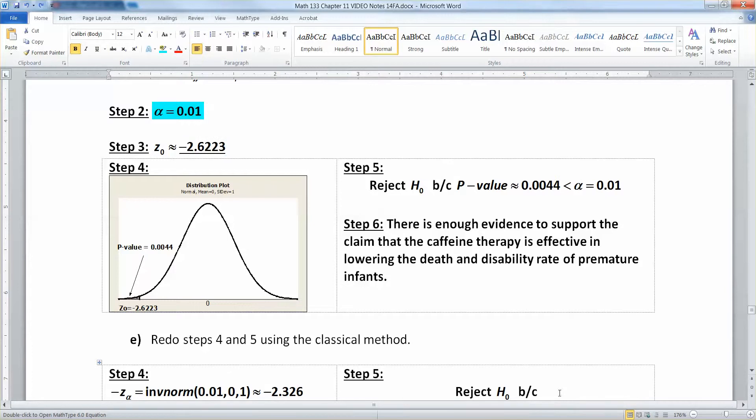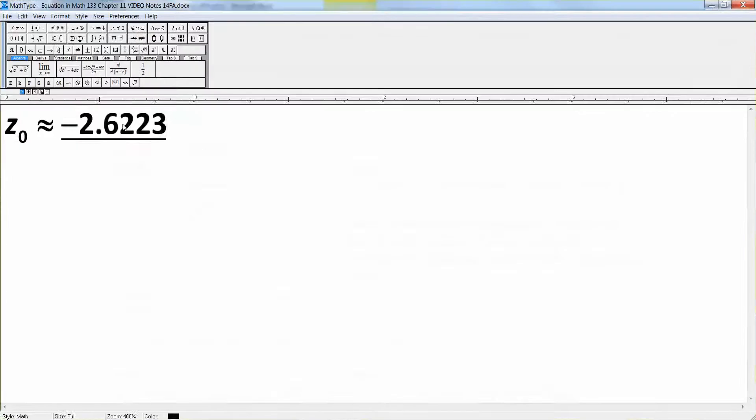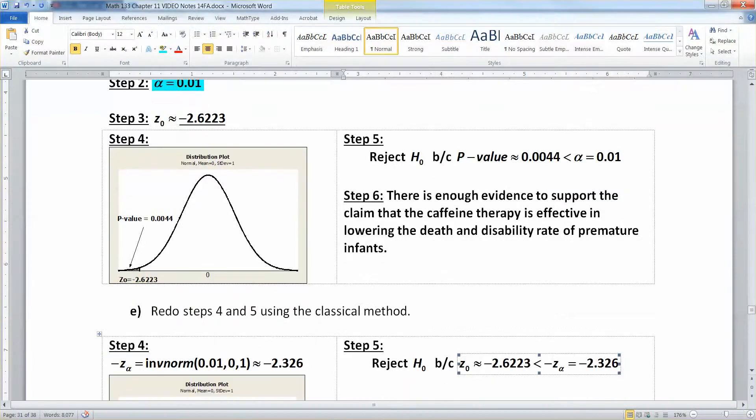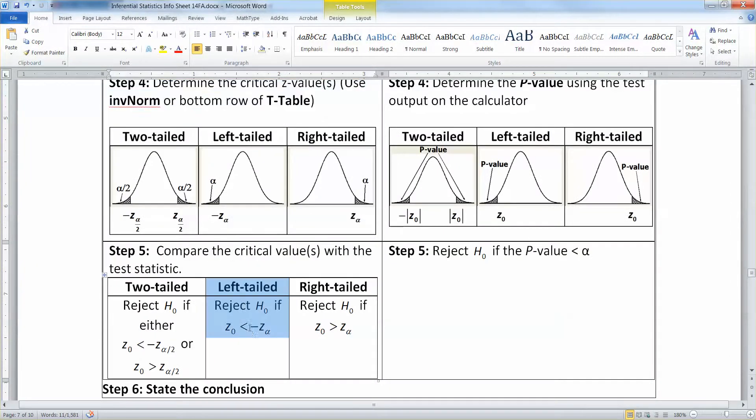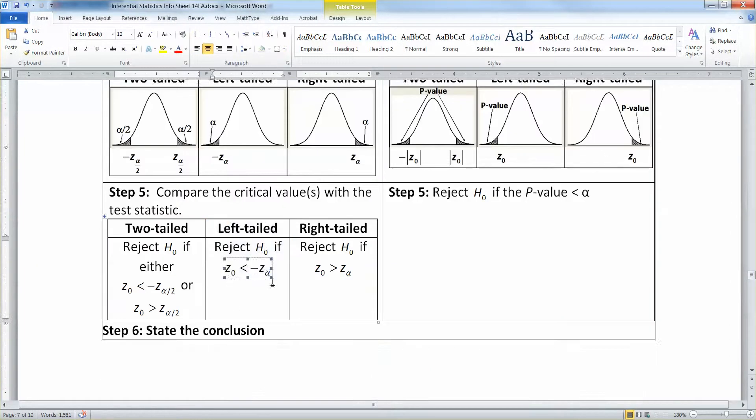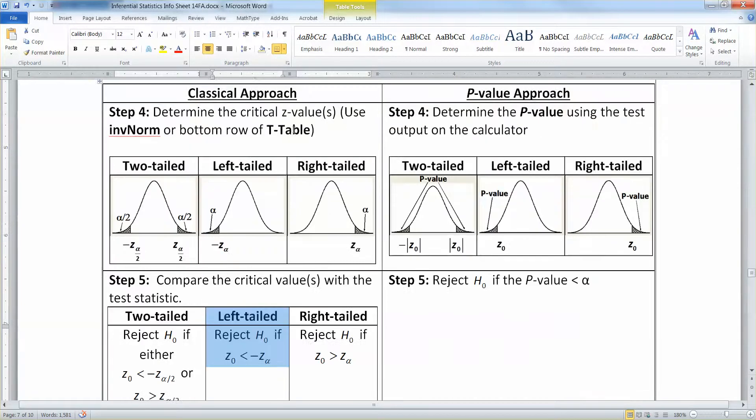Let me type that up. Nope, not there. There it is. Z0, which is negative 2.623, is less than our negative Z alpha, which was negative 2.326. Right? And again, that's because this is a left-tailed test. So what you're using is this rule right here. You reject the null hypothesis if your Z zero is less than your negative Z alpha.